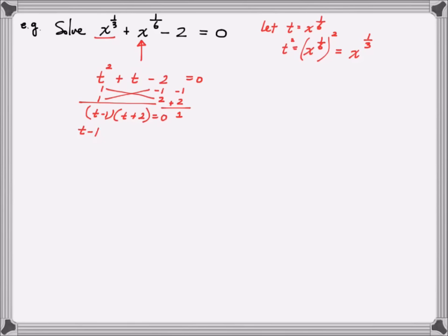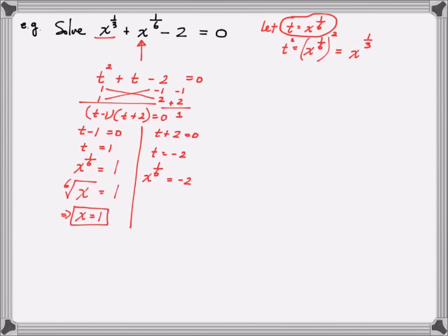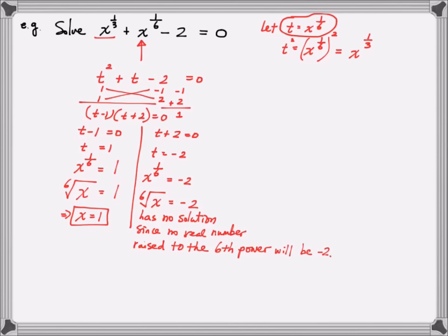Using the zero product property, t - 1 = 0 or t + 2 = 0. If t = 1, then x^(1/6) = 1, meaning the sixth root of x equals 1. Raising both sides to the sixth power gives x = 1. On the other hand, if t = -2, then x^(1/6) = -2. Since we would never get a negative number from an even root, this has no solution. Therefore, the only solution is x = 1.